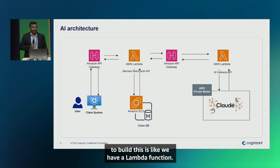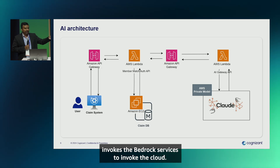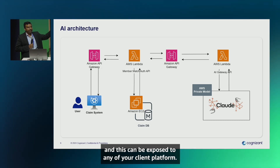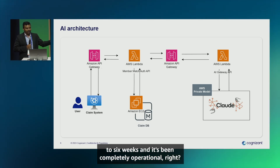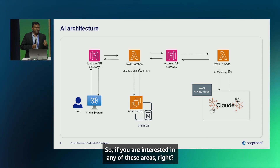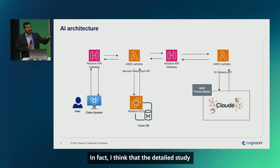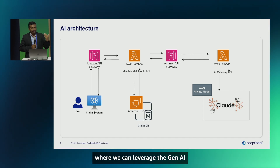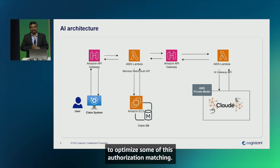The architecture includes a Lambda function that invokes Bedrock services to invoke the cloud, and on top of it we built an API Gateway that can be exposed to any claim platform. This whole platform was built in four to six weeks and is completely operational. We looked at five or six areas initially, but a detailed study found around 20 to 30 areas where we can leverage Gen AI to optimize authorization matching.